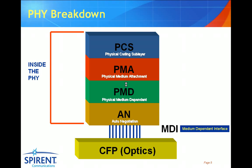During this presentation, we're going to focus on some of the problems that arise between the physical interface and the compact form factor pluggable optical interface. The physical interface is sometimes abbreviated to just the PHY, and this interface is made up of a number of different components. We're really going to focus on the MDI — the media dependent interface — which interfaces directly into the CFP. For this presentation, we're going to assume that there are 10 lanes of 10 gig coming from the PHY into the CFP.